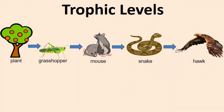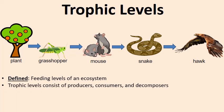Now let's talk about the trophic levels in an ecosystem — the feeding levels. Here you see a food chain with five trophic levels: the plant is level one, the grasshopper level two, the mouse level three, the snake level four, and the hawk level five. Trophic levels show how organisms feed throughout an ecosystem.